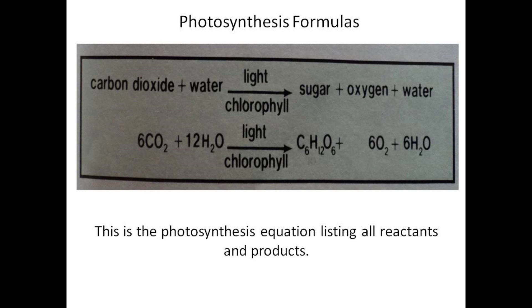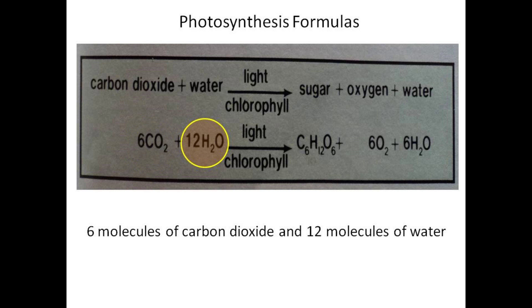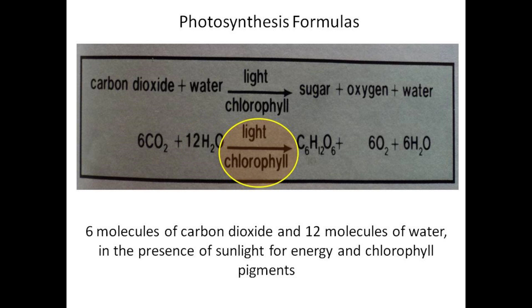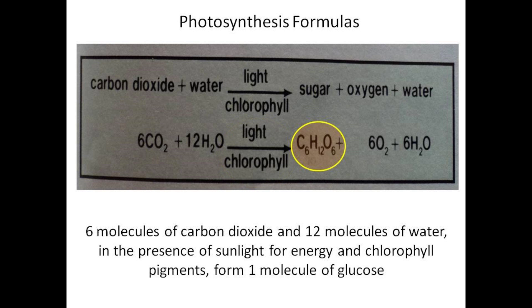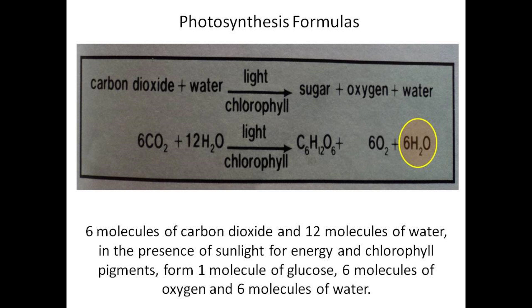This is the photosynthesis equation, listing all reactants and products. Six molecules of carbon dioxide and 12 molecules of water, in the presence of sunlight for energy and chlorophyll pigments, form one molecule of glucose, six molecules of oxygen, and six molecules of water.